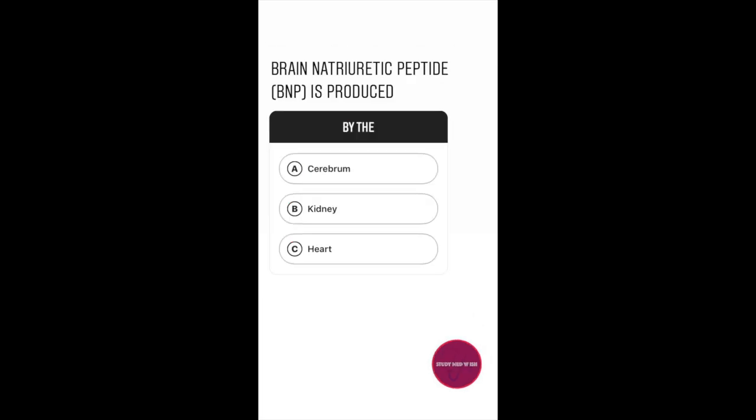Question number five. Brain natriuretic peptide is produced by the Option A: Cerebrum. Option B: Kidney. Option C: Heart.